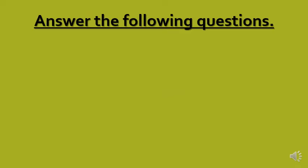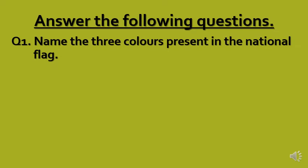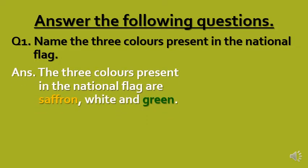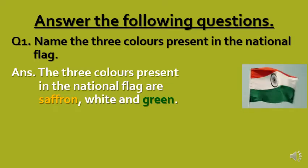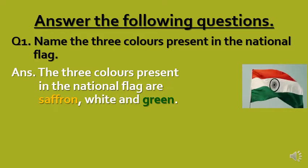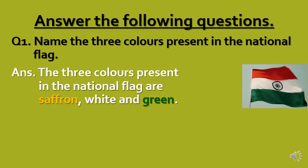Now, answer the following questions. Question 1: name the three colors present in the national flag. The three colors present in the national flag are saffron, white and green. The color saffron stands for courage, white for truth, and green for life. You can see the picture of our national flag here.